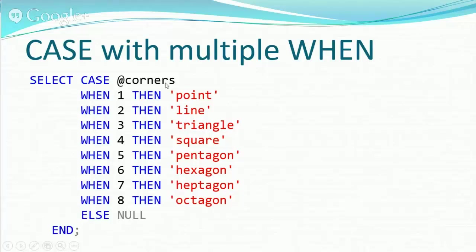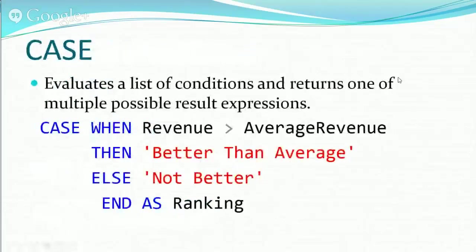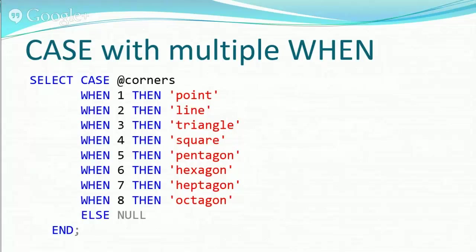If the variable is corners — so case of corners — let me jump back to the previous slide. We had case blank when an expression, and in this one we have case of something, when it's an actual value. Two different ways: you can leave the case empty and put in a comparison on each when clause, or you can just pass in a variable that gets checked on each line going through.